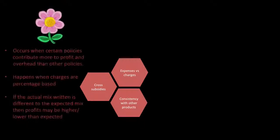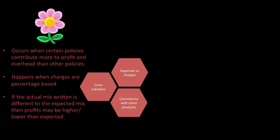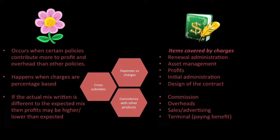Cross subsidies occur when certain policies contribute more to profit and overheads than other products. It happens when charges are percentage-based; if the actual mix written is different from the expected mix, profits may be higher or lower than expected. For expenses versus charges, items covered by charges — known by the acronym RAPID costs — include Renewal administration, Asset management, Profit, Initial administration, and Design of the contract, as well as commissions, overheads, sales and advertising, and terminal expenses.